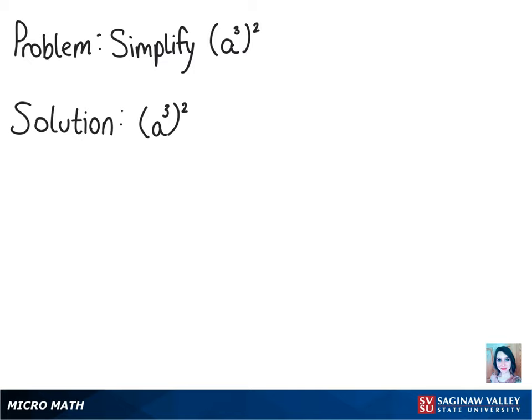So we have a cubed squared, so we'll have to multiply the 2 and the 3. Let's do that, and we will get a to the power of 2 times 3, which will give us our final answer of a to the 6th power.